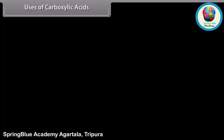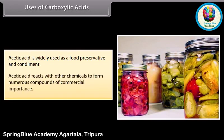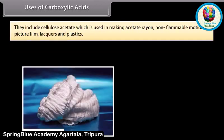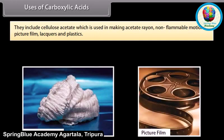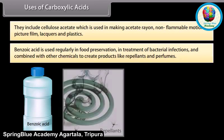Uses of carboxylic acids: acetic acid is widely used as a food preservative and condiment. Acetic acid reacts with other chemicals to form numerous compounds of commercial importance, including cellulose acetate, which is used in making acetate rayon, non-flammable motion picture film, lacquers, and plastics. Benzoic acid is used regularly in food preservation, in treatment of bacterial infections, and combined with other chemicals to create products like repellents and perfumes.